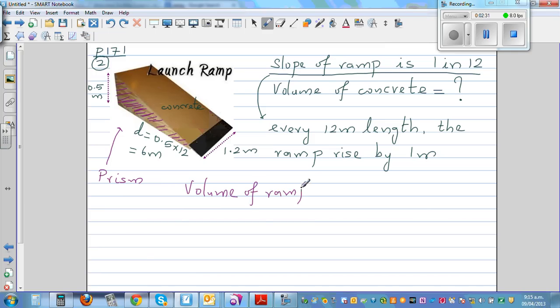Base area times height. So this 1.2 meters is your height, and this is your area that you need to find. Now this is a triangle, so area of a triangle is half base times height, or base times height divided by 2.